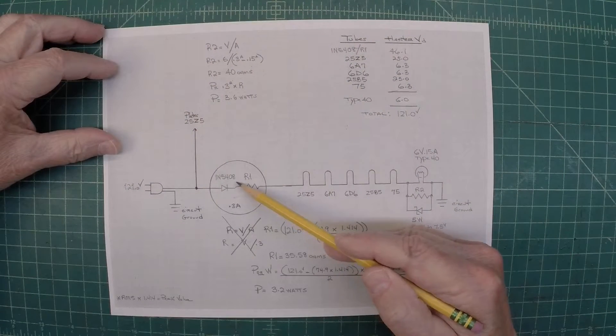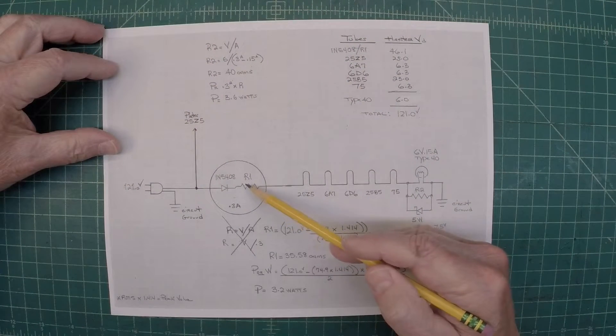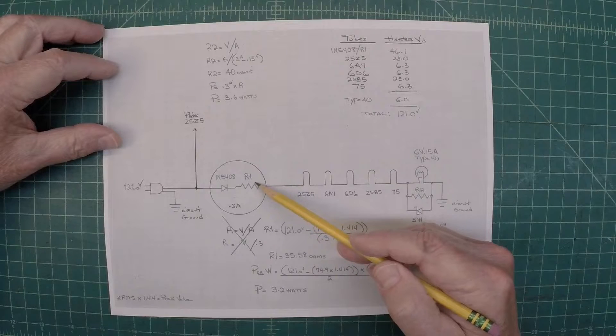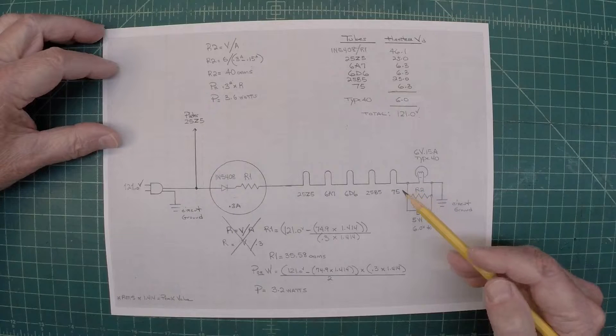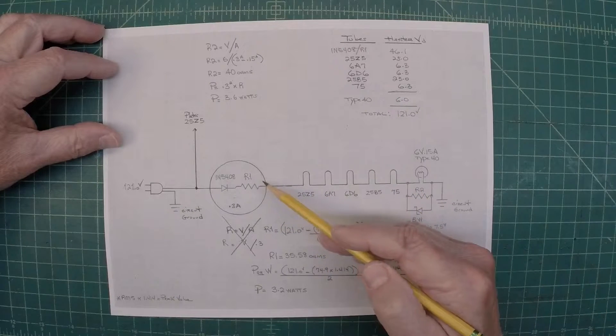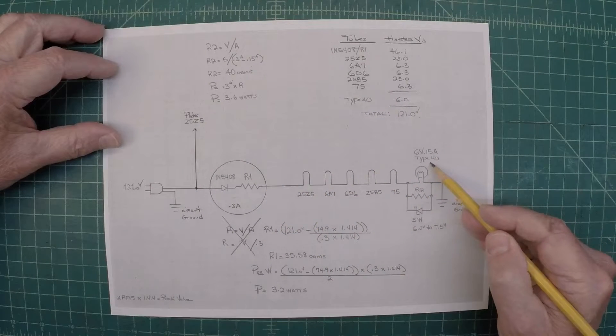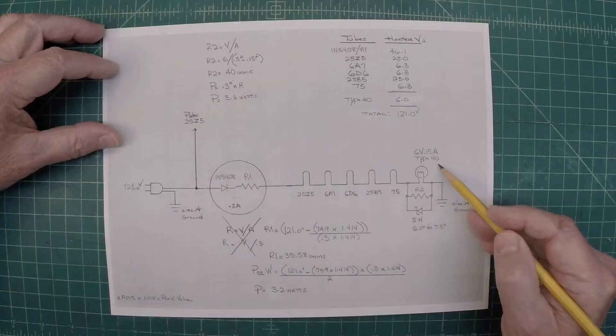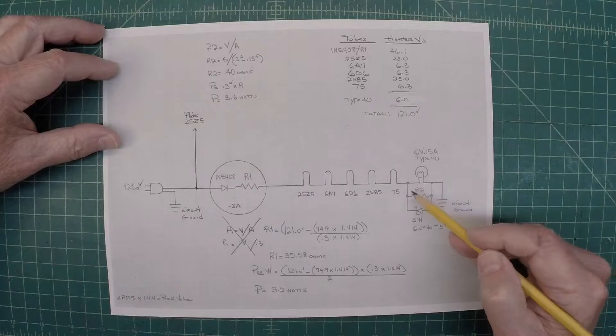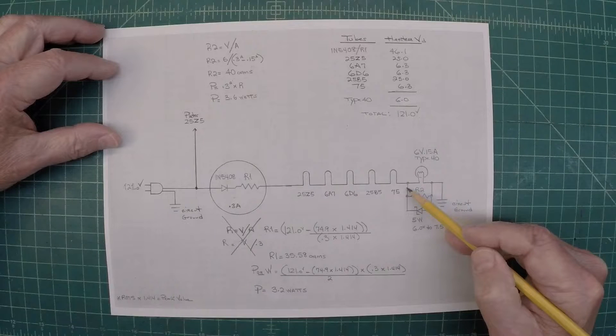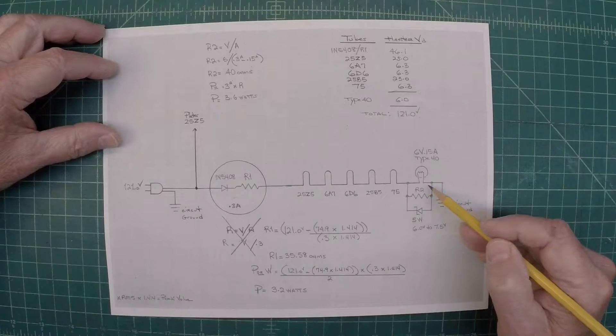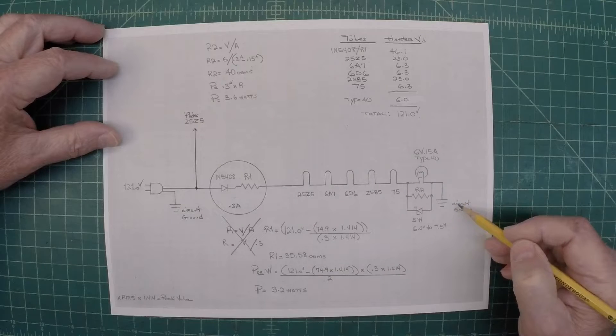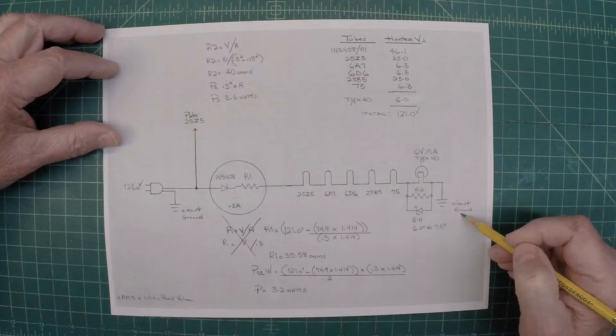So as I mentioned, the 1N 5408. And you can see that feeds across to R1. And then you have the rest of your string. One thing you'll notice different, I moved the 6-volt type 40 lamp, the dial lamp, down here to the end of the string. Right off of the type 75 tube. So that's where I have it residing. And it terminates back at circuit ground in this case.